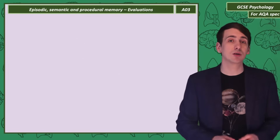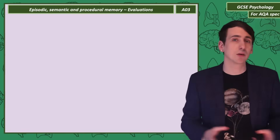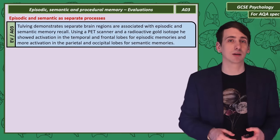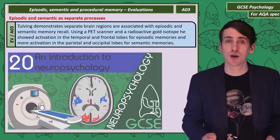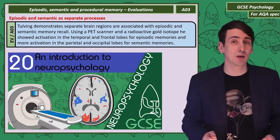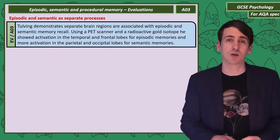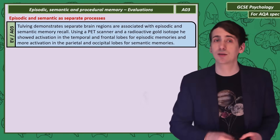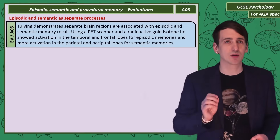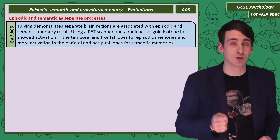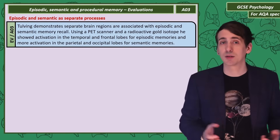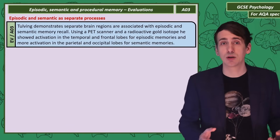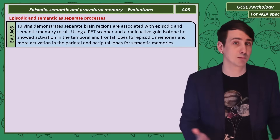Let's look at some evaluations for the types of long-term memory. We can find support for episodic and semantic memories being separate processes with the work of a psychologist called Tulving. Tulving injected people and himself with a radioactive form of gold. You can detect that gold in the brain on a PET scanner, showing what part of the brain is active. When participants thought of episodic memories, areas in the frontal and temporal lobe lit up. When they thought of semantic memories, areas in the parietal and occipital lobes lit up. As different types of memory use different brain regions, this suggests that they're separate processes.